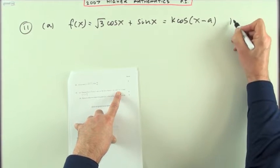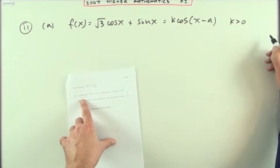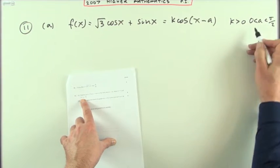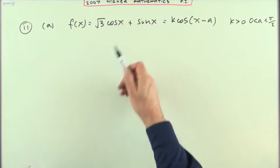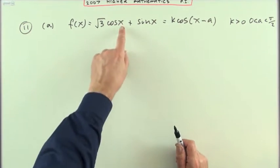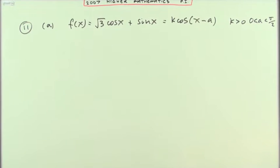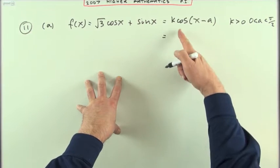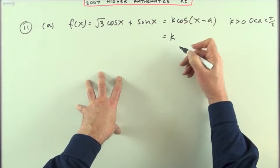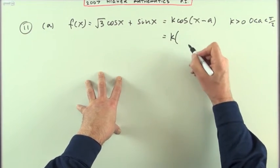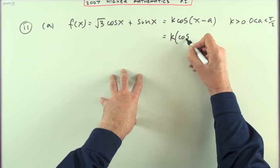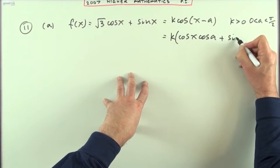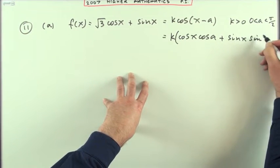For when you do your square root, and A is an acute angle between zero and pi upon two. Notice it's in radians because there are no degree signs. The first part would be to expand that, so you look up the front and get k times, the expansion would be cos x cos A, the opposite way around, plus sine x sine A.